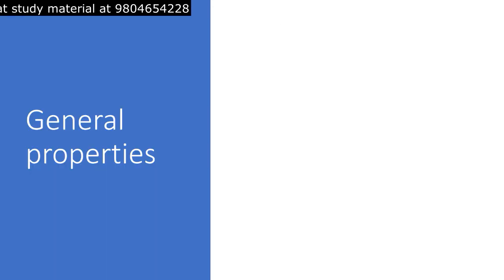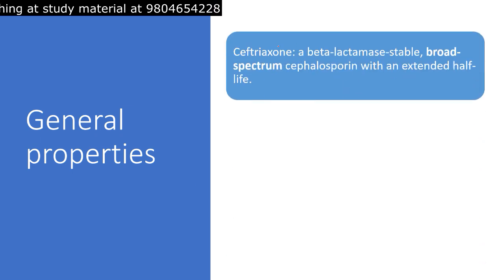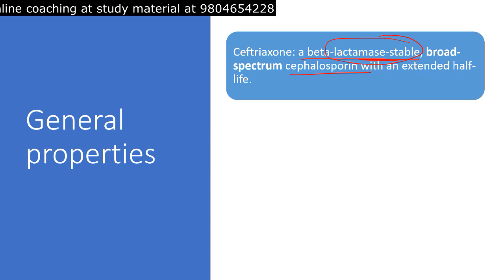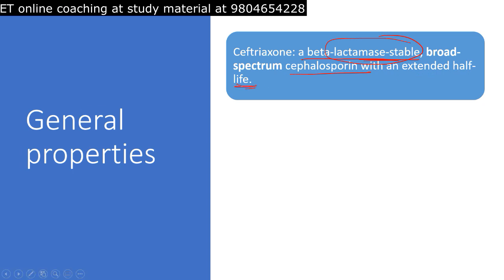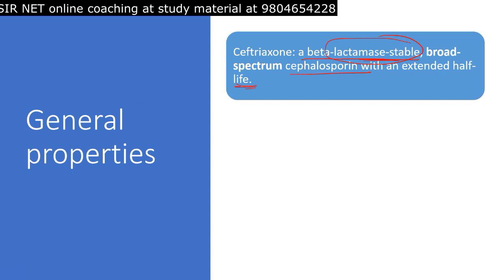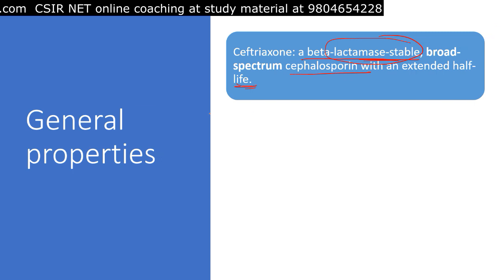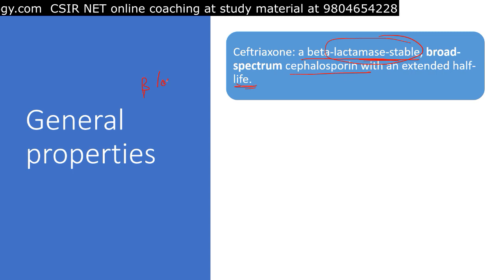Let's start with the general properties of ceftriaxone antibiotic. Ceftriaxone is a beta-lactamase stable, broad-spectrum cephalosporin antibiotic with an extended half-life. This means the drug stays in our body for a longer duration of time compared to other cephalosporin-type antibiotics.